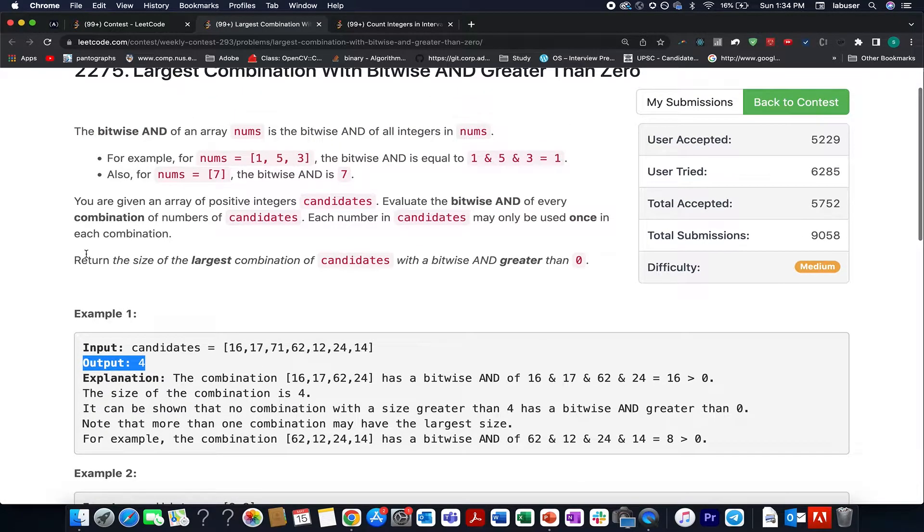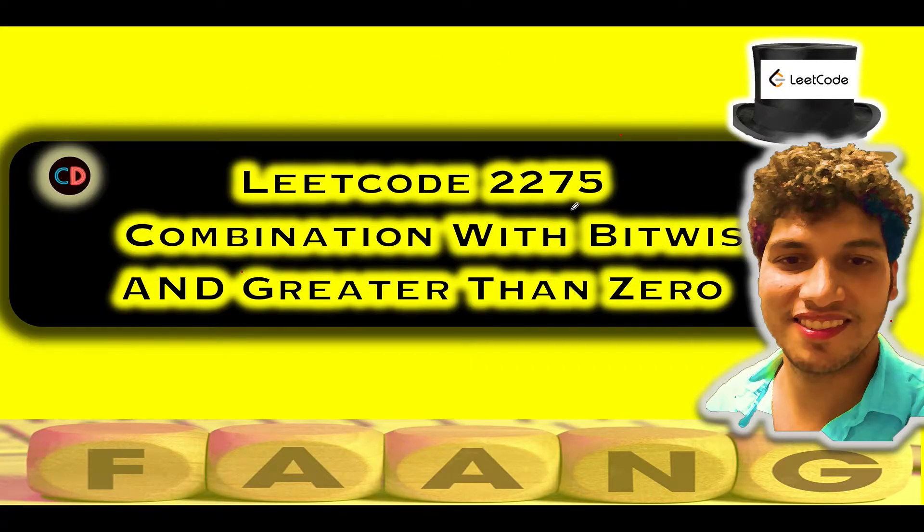The key point to be noted over here is we need to identify that largest combination of candidates where the bitwise AND is greater than zero. It could be any value greater than zero. We don't need to maximize that value. We need to maximize the largest combination of candidates. This is the key takeaway from this question. LeetCode 2275 combination with bitwise AND greater than zero. It's a medium level question on LeetCode and I also feel the same.